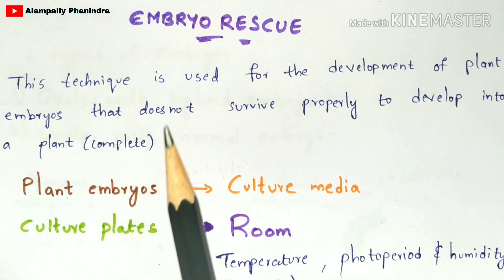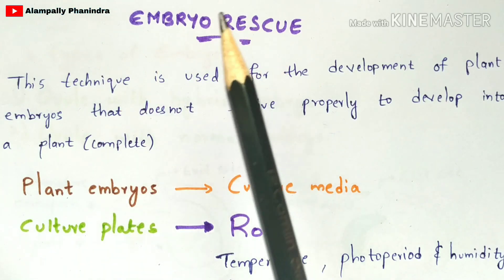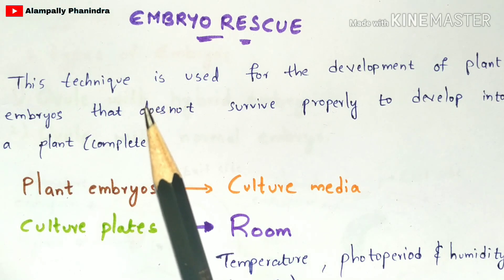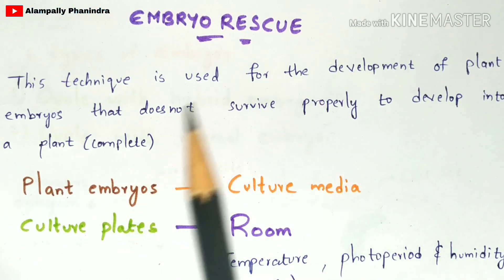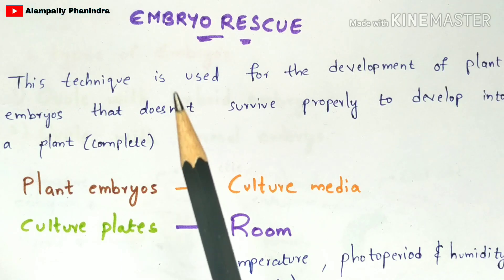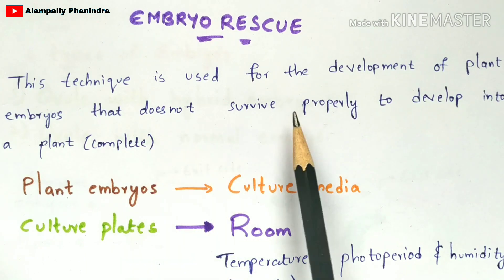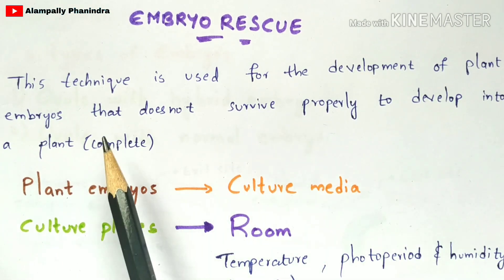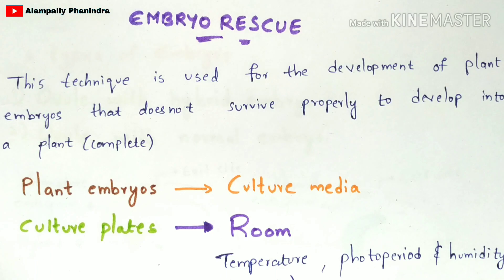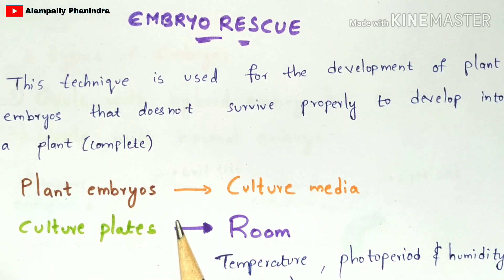In some cases, there are embryos which cannot develop into a complete plant. To address this, the embryo rescue method is used. When applied to an immature embryo, it will get converted into a normal mature embryo, and that mature embryo will develop into a complete plant. The most widely used embryo rescue procedure is referred to as embryo culture.